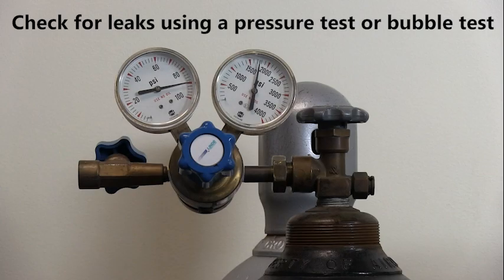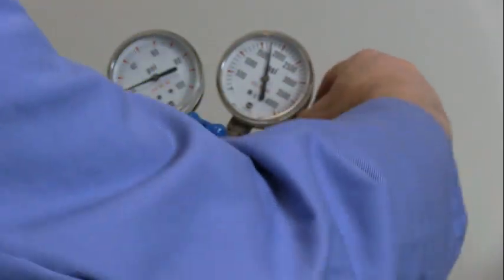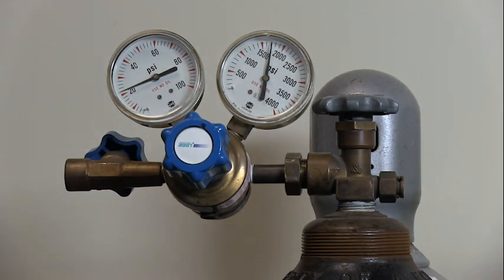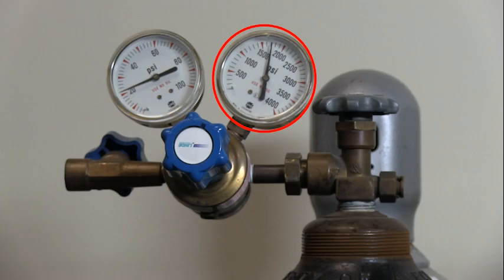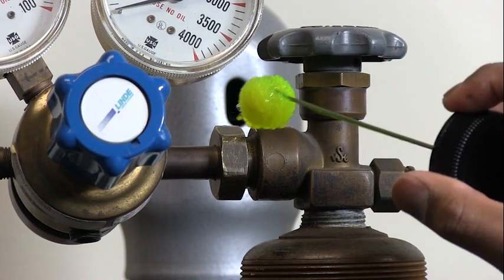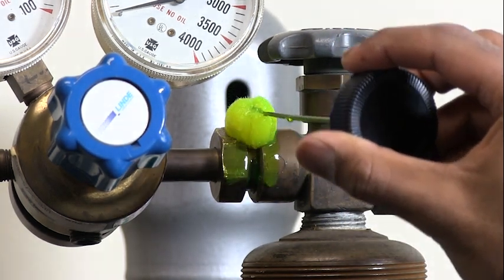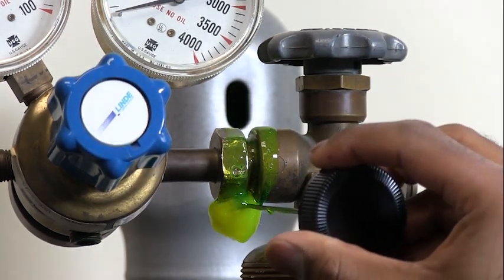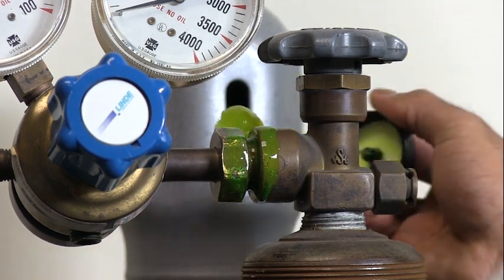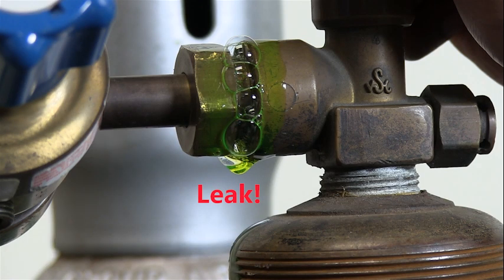Leaks can be detected by performing a pressure test or a bubble test. To perform a pressure test, close the cylinder valve after checking the regulator's function. If the pressure on the inlet gauge remains steady, there are no leaks. To perform a bubble test, use an approved bubble solution such as Snoop. Apply the solution near the inlet connection, the outlet connection, and the valve stem connection. If there are no bubbles, there are no leaks.